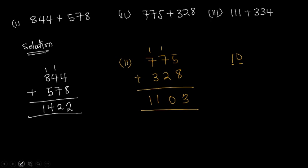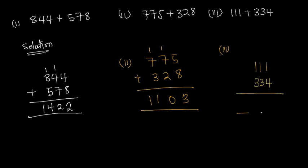Since we can't write 11 here, this becomes the answer for II: 1103. For exercise III, we have 111 and 334. We add the ones first: 1 plus 4 gives 5, 1 plus 3 gives 4, 1 plus 3 gives 4. The answer after adding 111 and 334 is 445. Thank you for watching — this is how we add three-digit numbers in column format.